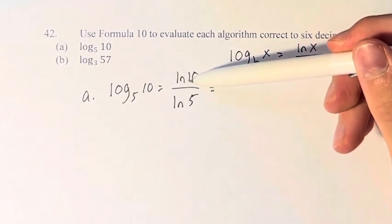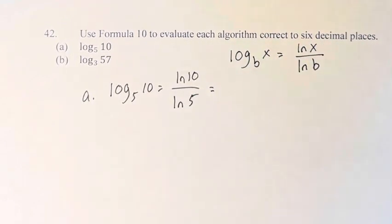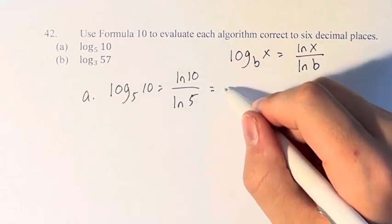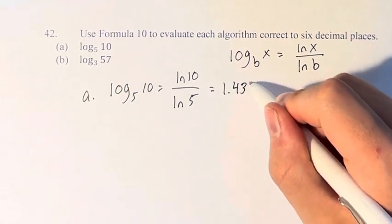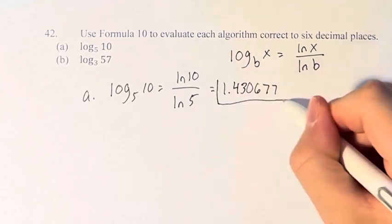And then what you have to do is calculate the natural log at 10 and 5 with a calculator, obviously. And you'll get 1.430677, to six decimal places.